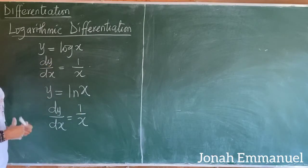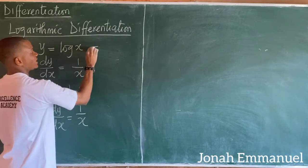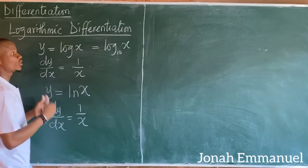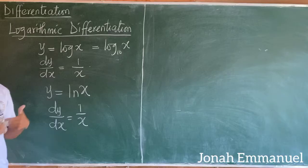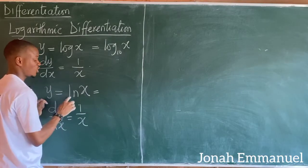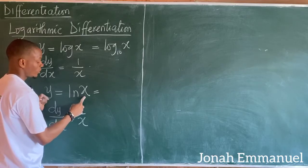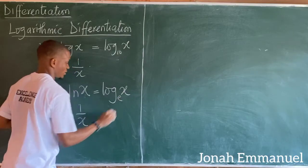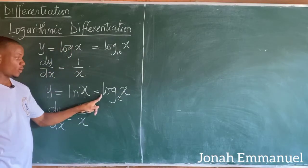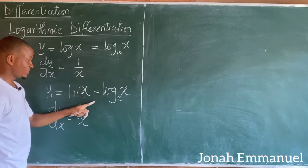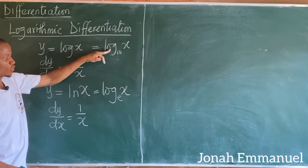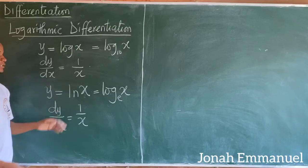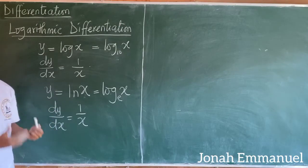The truth is, log and ln are related. Log x means log of x to base 10. If I take ln of a number or variable, ln of x equals log x to base e — this is called the natural log. Since both are logarithms, irrespective of their base, both differentiate to 1 over x. This is how you differentiate logarithmic functions.